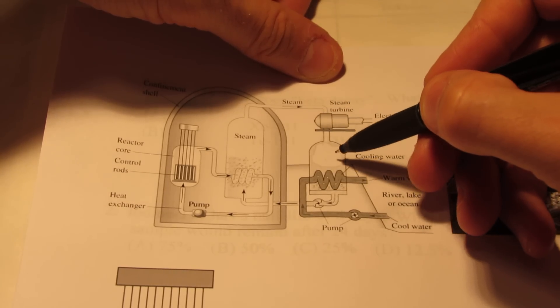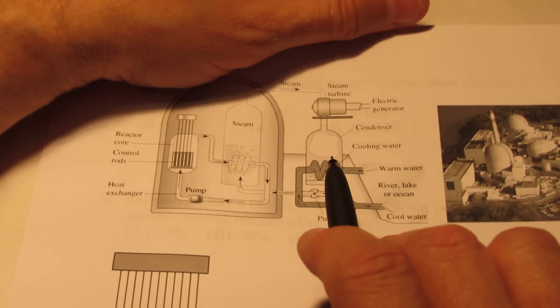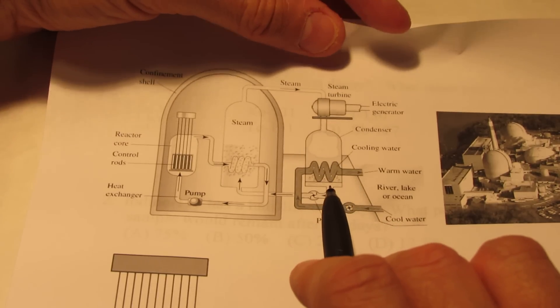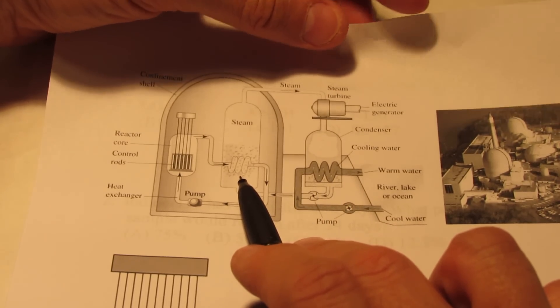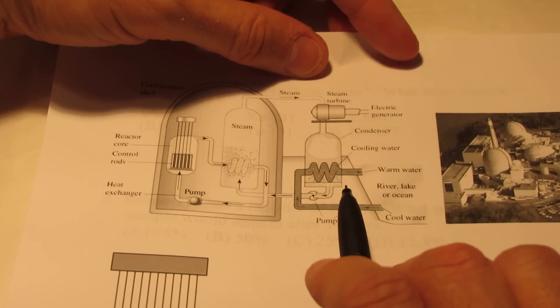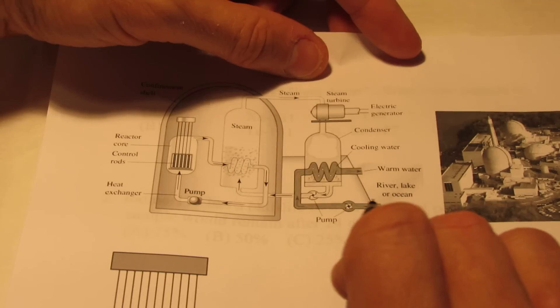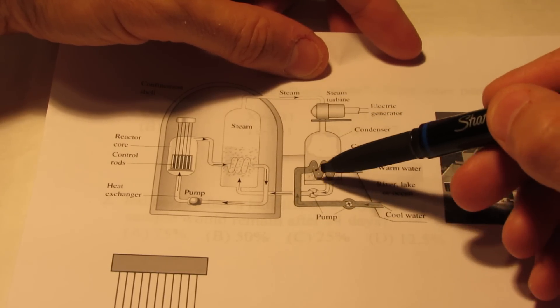Now after that steam is used, we'd like to reuse it, so we're going to cool it. The cooling process will condense that steam back into liquid water, and that can be placed in the steam generator where the process can repeat itself. So oftentimes nuclear power plants are built by large bodies of water where cool water can be pumped into this condensing area and cool that steam down.